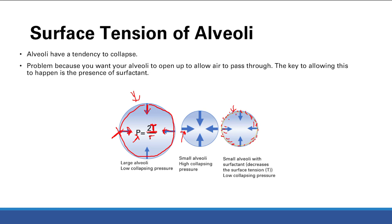Surfactant is made of phospholipids, which don't mix with the fluid lining, and that's how it works. This decreases the collapsing pressure so your alveoli can stay open for respiration. It makes your alveoli open up more easily — increasing lung compliance. The collapsing pressure has decreased thanks to surfactant.